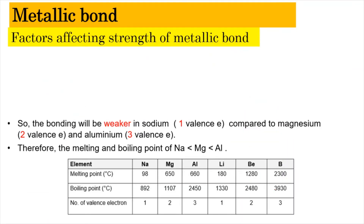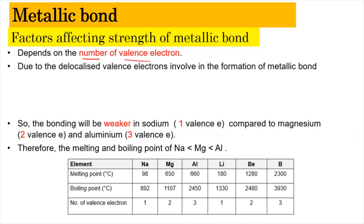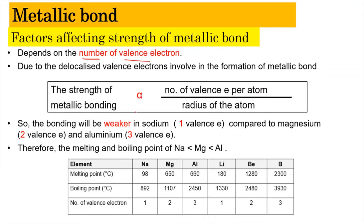Now we look at the factors affecting the strength of the metallic bond. Generally, the strength depends on the number of valence electrons, due to the delocalized valence electrons involved in forming the metallic bond. The strength can be related to the number of valence electrons per atom and the atomic radius. When the number of valence electrons per atom increases, the strength of the metallic bond increases. For the radius, it is inversely proportional to the strength — a smaller atomic radius results in a stronger metallic bond.